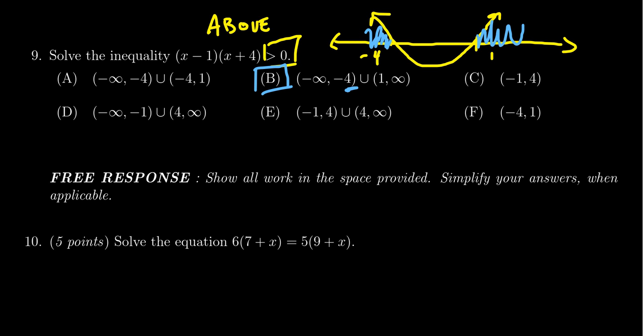Notice that negative 4 and 1 are not included in the solution because we only have greater than 0, not greater than or equal to 0. So we grab the wings of our bird here and get choice B.